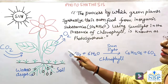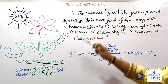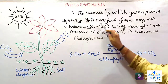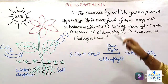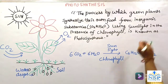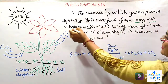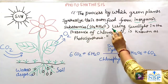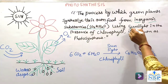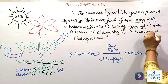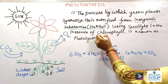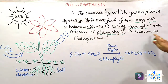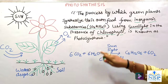This process is called photosynthesis. The process by which green plants synthesize their own food from inorganic substances like carbon dioxide and water, using sunlight and in the presence of chlorophyll in the leaves of the plant, is known as photosynthesis.